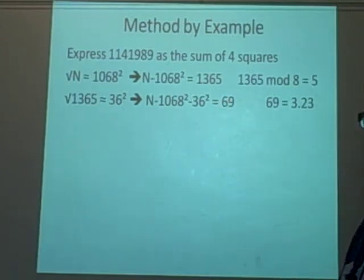Now we want to see if 69 can be expressed as the sum of 2 squares. And this means, if there are any, if it's prime, then it has to be equivalent to 1 mod 4.